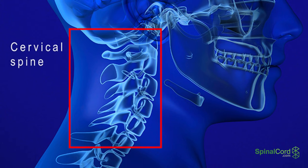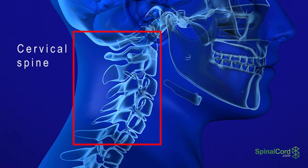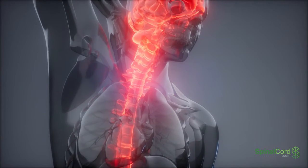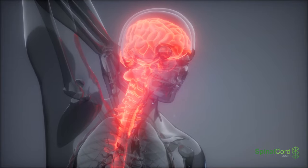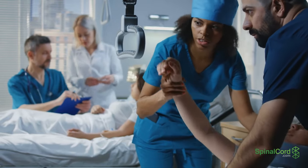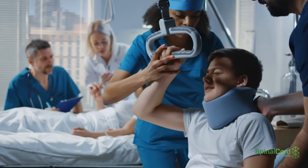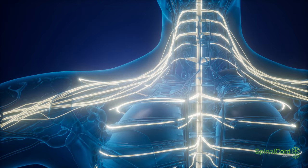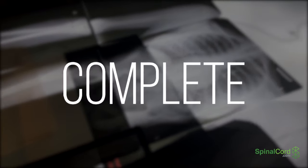The C3, C4, and C5 vertebrae form the midsection of the cervical spine near the base of the neck. Injuries to the nerves and tissues relating to the cervical region are the most severe of all spinal cord injuries, because the higher up in the spine an injury occurs, the more damage is caused to the central nervous system. Depending on how severe the damage is, the injury may be noted as complete or incomplete.